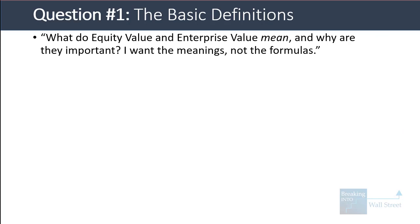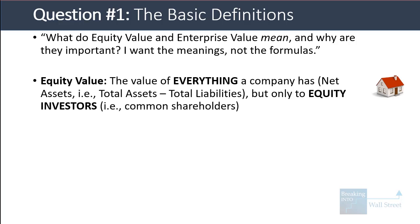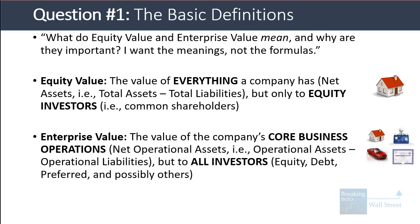Let's go through the basic definitions. What do equity value and enterprise value mean and why are they important? Equity value is the value of everything a company has — its net assets, total assets minus liabilities — but only to the equity investors or common shareholders. Enterprise value is the value of the company's core business operations, or its net operational assets, but to all investors: equity, debt, preferred, and possibly others. When we say 'value,' if looking at current equity value and enterprise value, this is the market value; if implied, it's your estimate of the value of everything the company has.